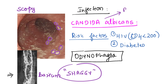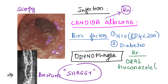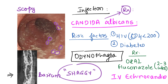The treatment of esophageal candidiasis: the first-line treatment is oral fluconazole, given for two to three weeks for the lesions to cure. However, if the patient has severe odynophagia and cannot take anything by mouth, then oral fluconazole is not possible. In that case, the alternative is an IV medication — IV echinocandin — which would be the drug of choice in this scenario.